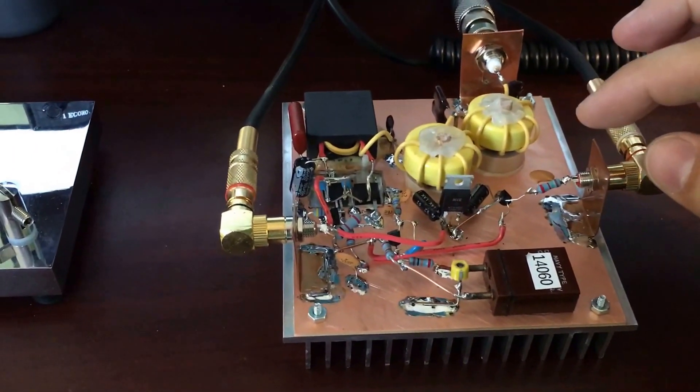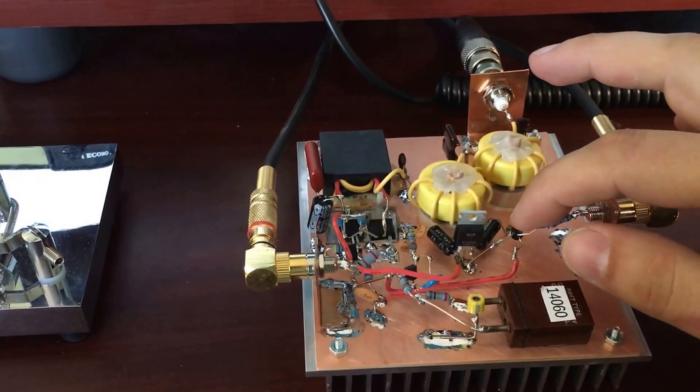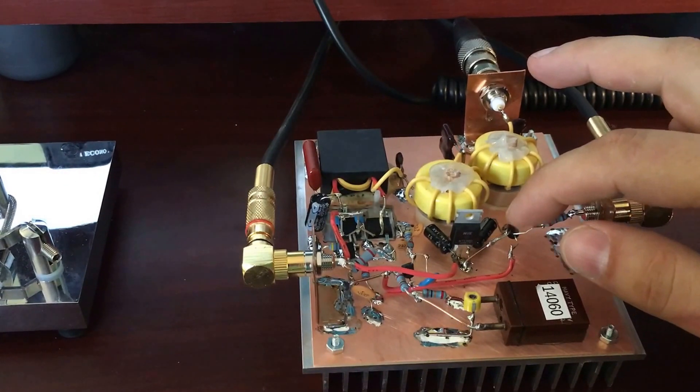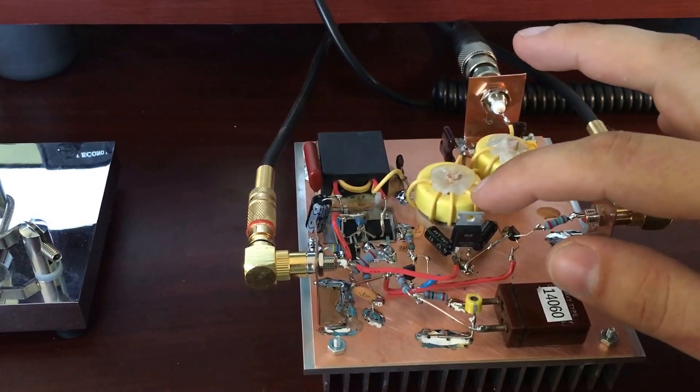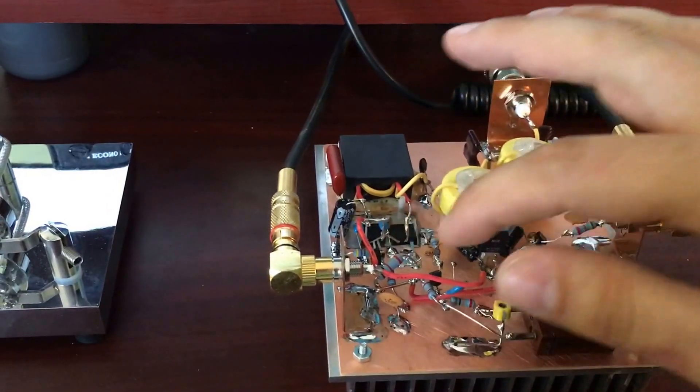the crystal oscillator is keyed via this PNP transistor 2N3906. It supplies 5 volts via this 5 volt regulator to the crystal oscillator.